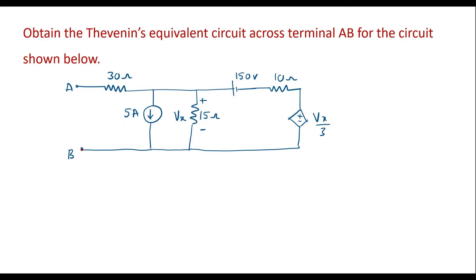This circuit consists of two independent sources: one 50-volt source, one 5-amp source, and one voltage-dependent voltage source. If the circuit consists of a dependent source, then we need to find three parameters: VTH (Thevenin's voltage), ISC (short circuit current), and RTH (Thevenin's resistance).